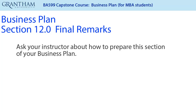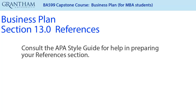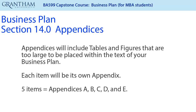Ask your instructor for suggestions on preparing the final remarks for your business plan. Consult the APA Style Guide for guidelines on preparing your references. Appendices include tables and figures that are too large to be placed within the text of your business plan. Each table or figure will be its own appendix, so if you have five tables or figures, you will have Appendix A, Appendix B, Appendix C, Appendix D, and Appendix E.